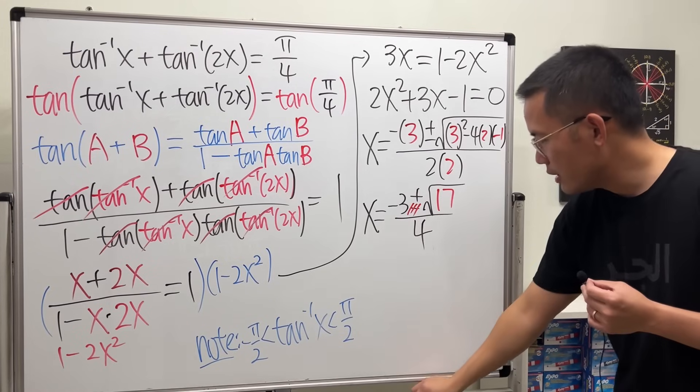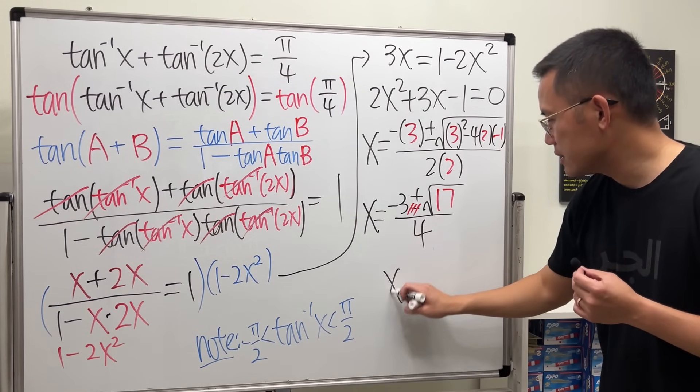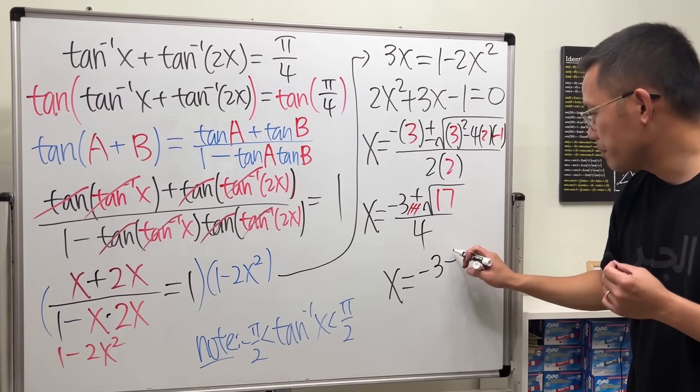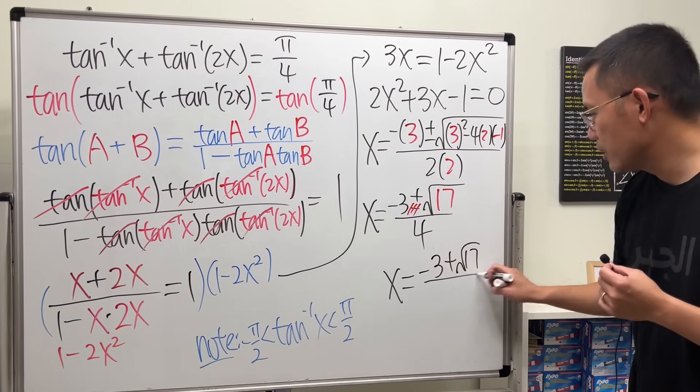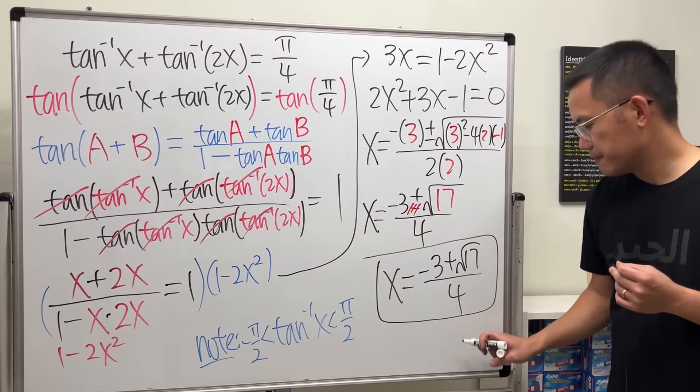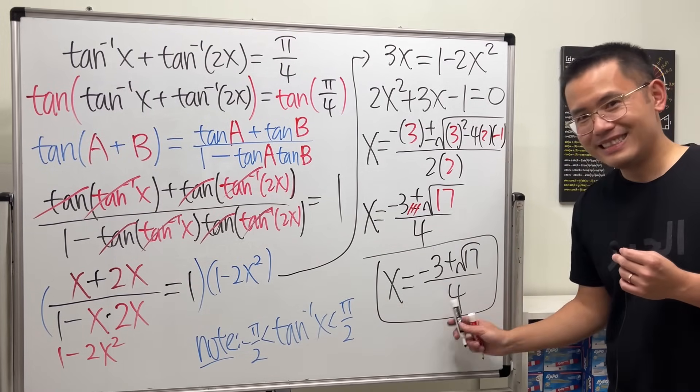So if we put a negative here, the whole thing is negative. If you put that into x here, the whole thing will be negative. Likewise, this part will also be negative. Negative plus a negative, you cannot get positive pi over 4. So therefore, the only possible answer for this is x equals negative 3 plus square root of 17 over 4. This is the only answer. That's it.